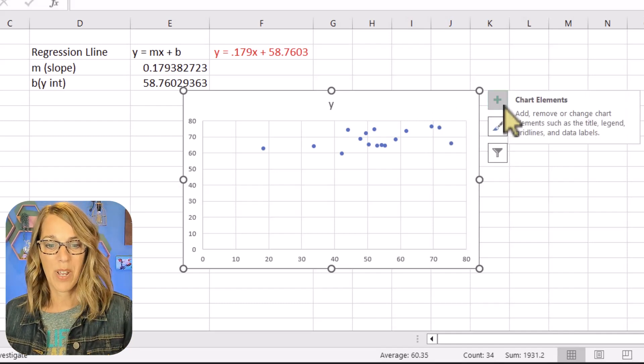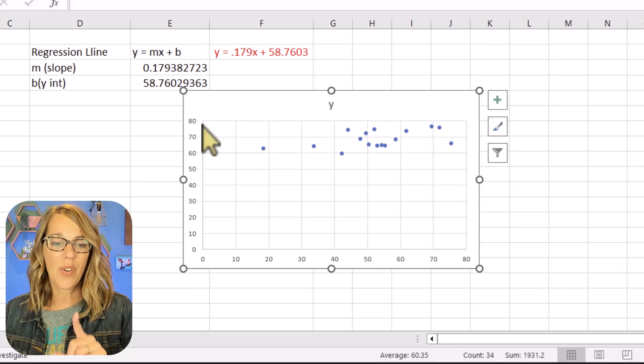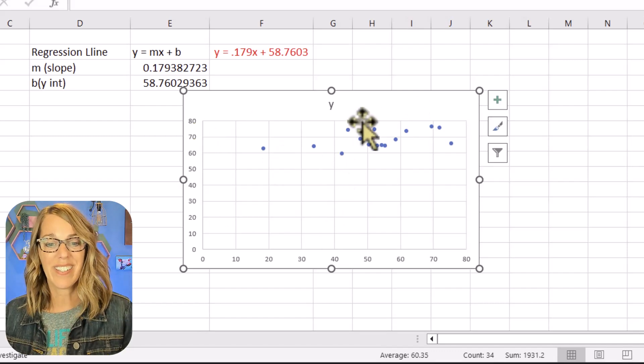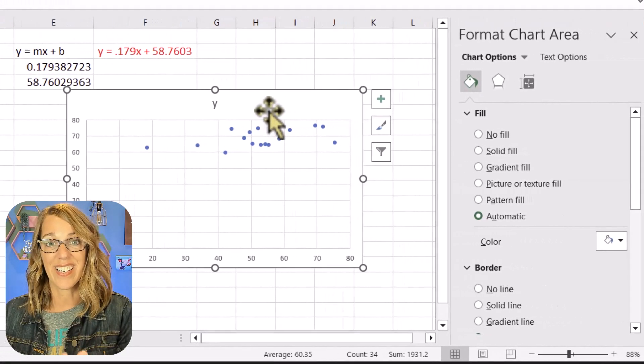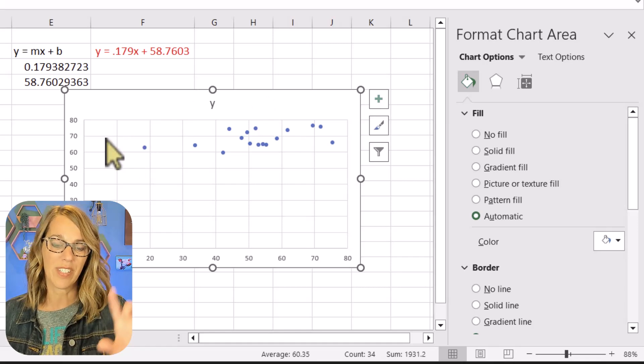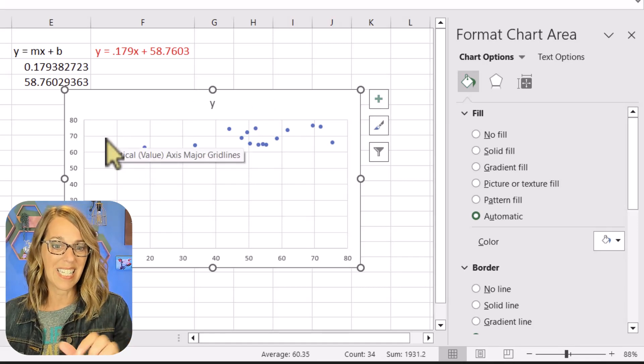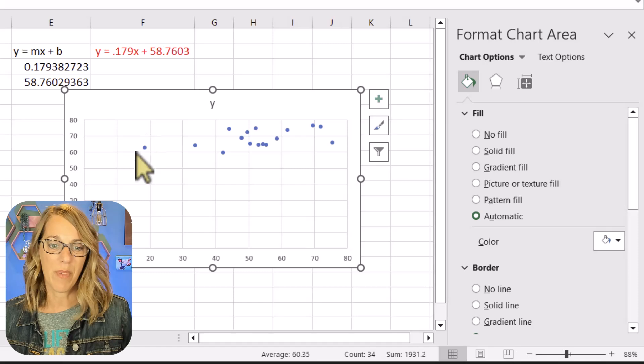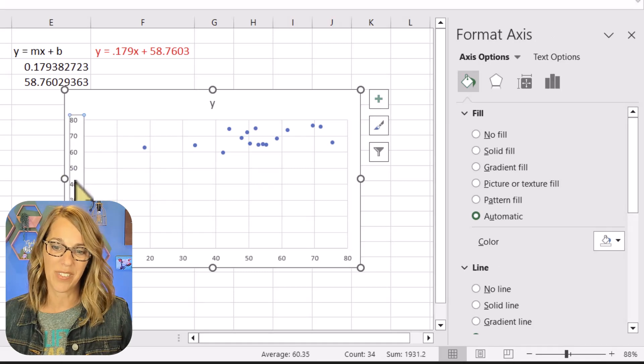You can hit the plus sign to bring up some adjustments. You can also click on different elements or you can double click on the chart. What I really want to do is to adjust my x and my y axis so that I get a better view of my points. So I'm going to double click on those axes.